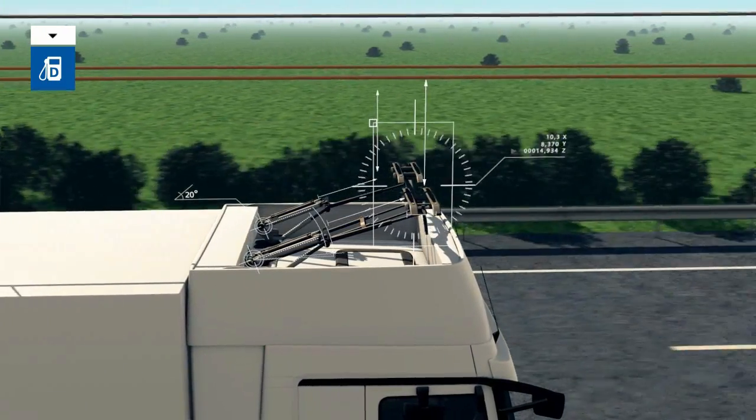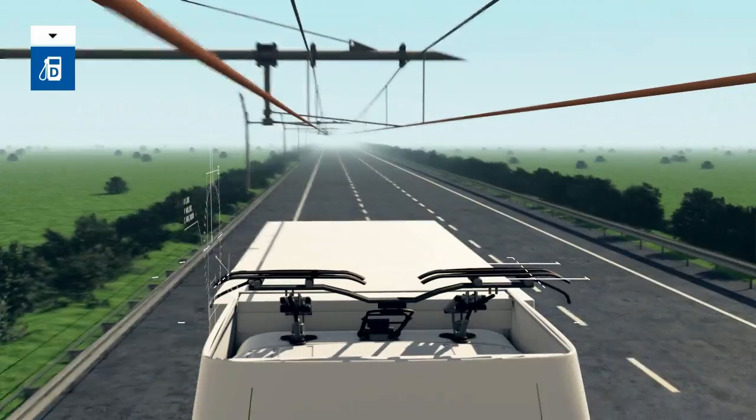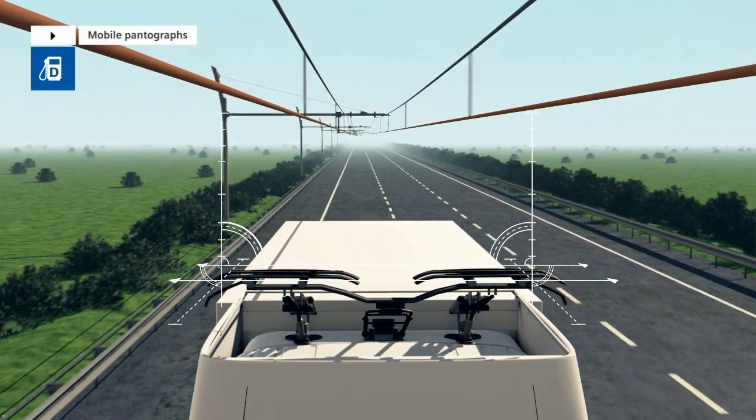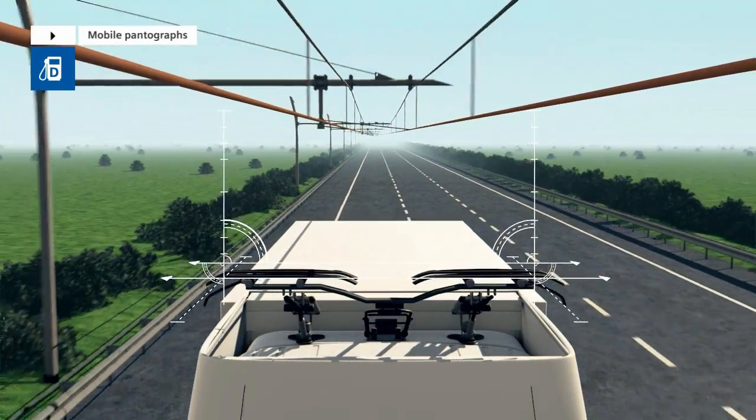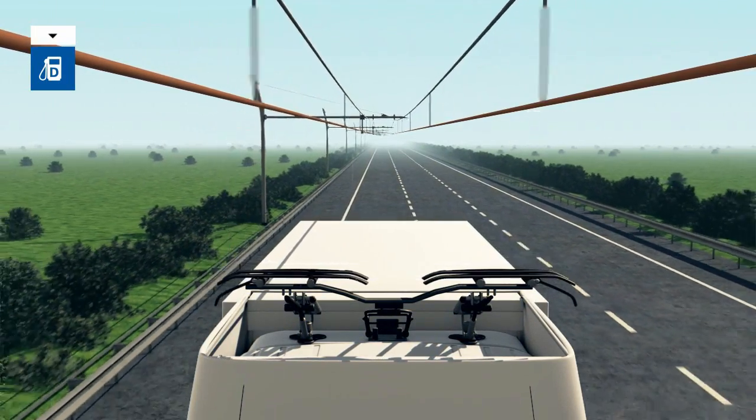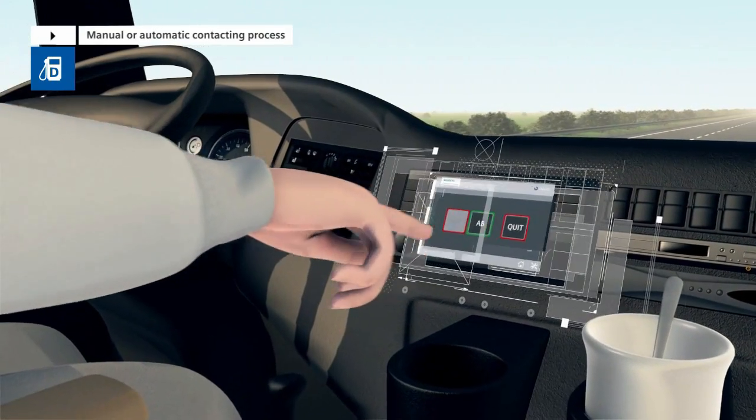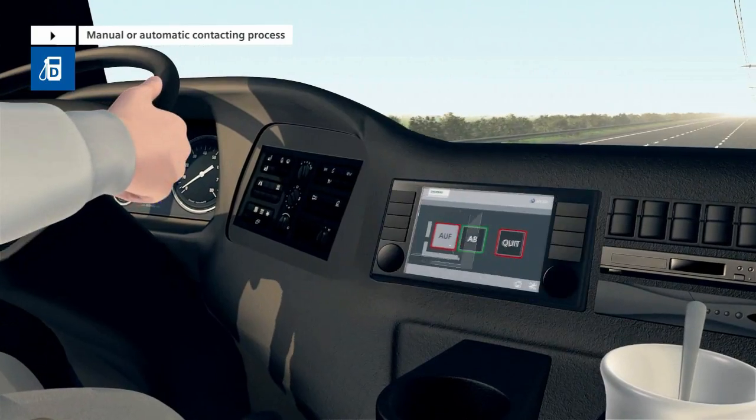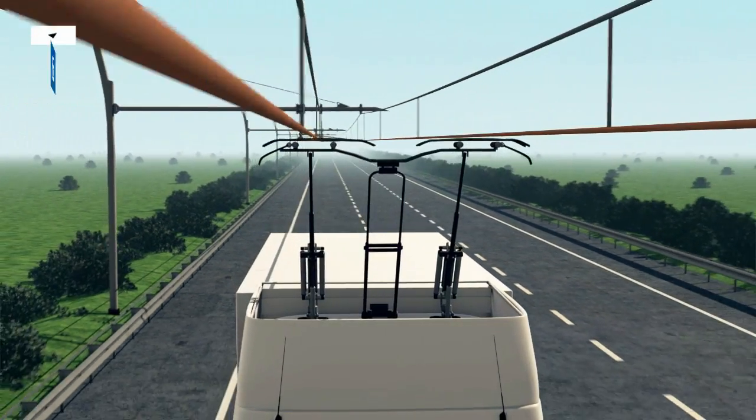the E-Highway truck's pantographs are automatically prepared for the docking process. The pantographs are mobile and adapt to the overhead contact line. The actual contacting process is performed either manually by the driver pressing a button or automatically.